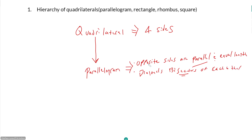Both of these things are true about parallelograms: opposite sides are parallel and equal length, and their diagonals are bisectors of each other. However, to go from a quadrilateral to a parallelogram, we only need to know one of these things, because if we know one, the other is necessarily true based on that.